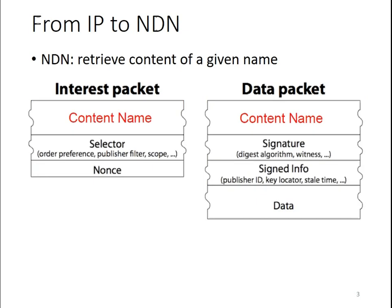Our new architecture, NDN, provides the service to retrieve content of a given name. The NDN packet carries a content name, but there is no address in the packet.